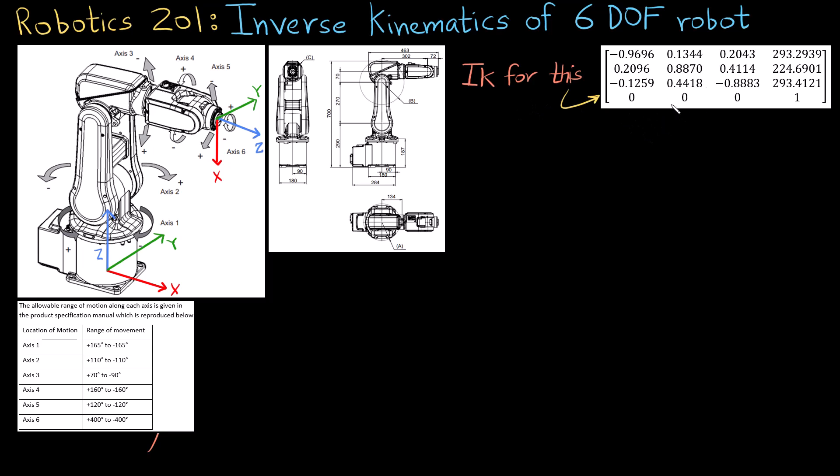So now beginning inverse kinematics, we already talked about the steps. The first one was to define a base frame and an end effector frame which we have already done. The second one is to write out the forward kinematics.